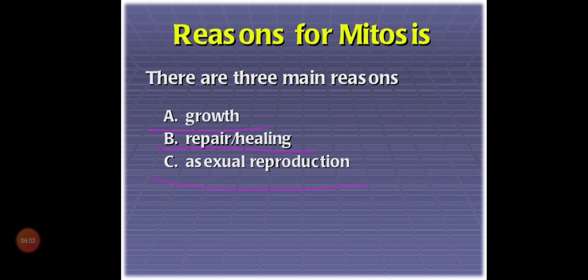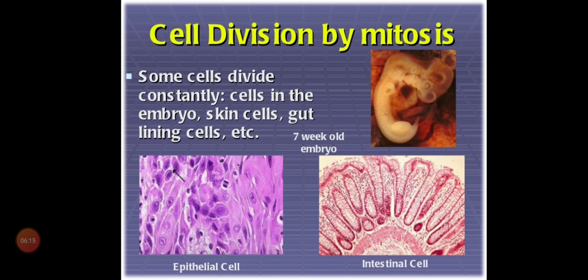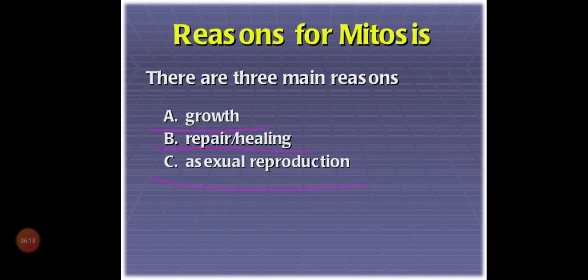These are the three main reasons why cells should undergo division. Now we are clear about what is cell division, why cell division should occur, and the reasons for mitosis.